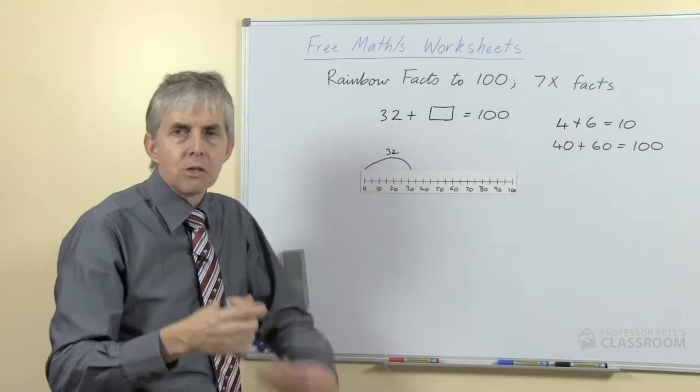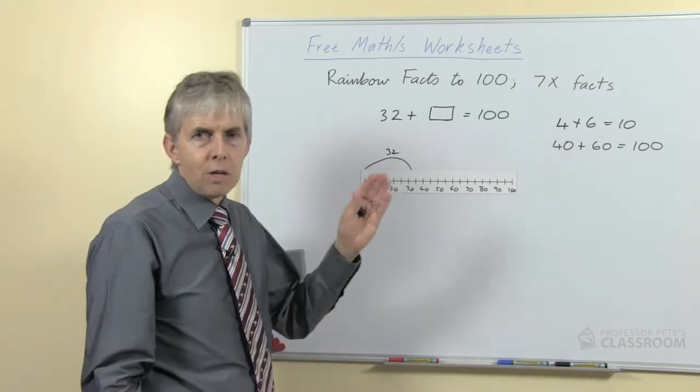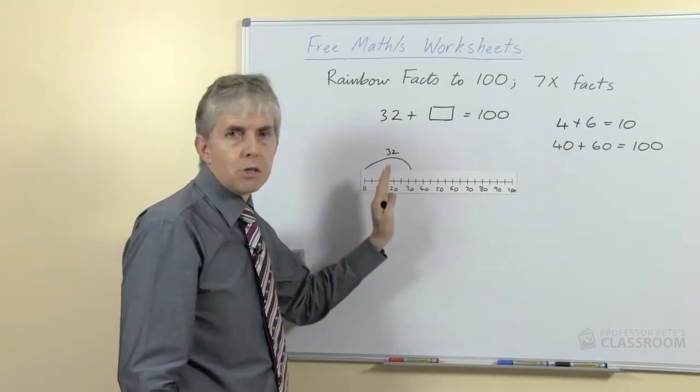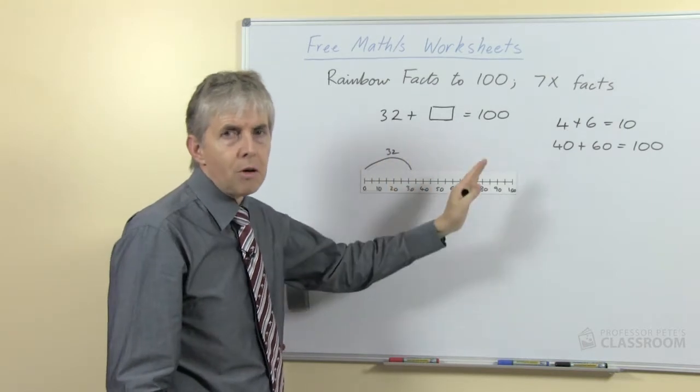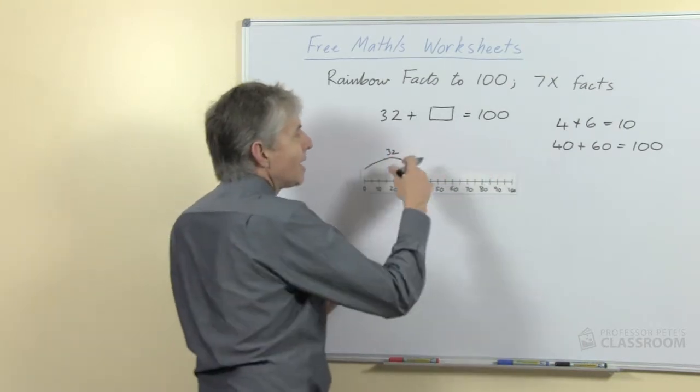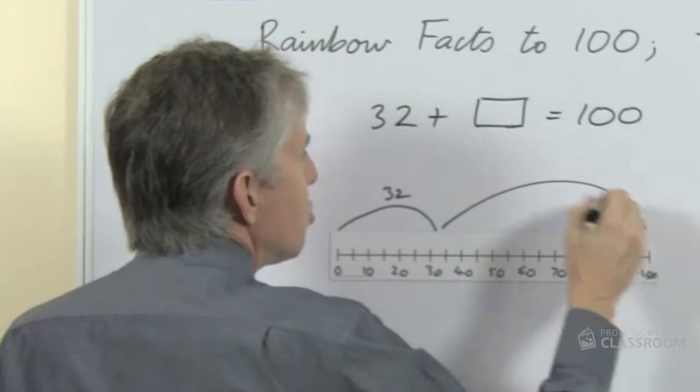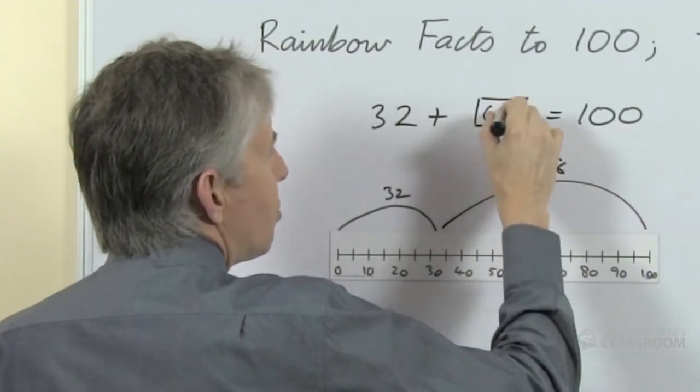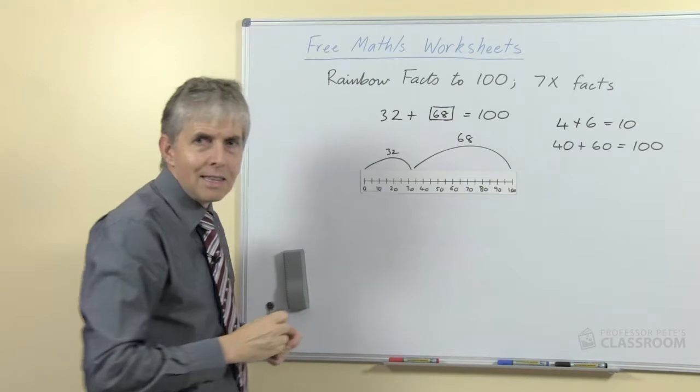Well it's not going to be 70, is it? Because 70 was the answer when our first hop was to 30, this is a little bit beyond that, so the 2 has to be taken away from 70, and of course this will be 68. And there's a variety of different ways we could help the students to understand that.